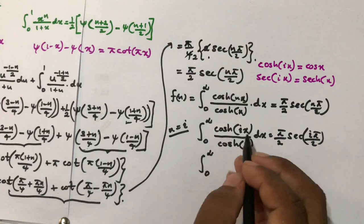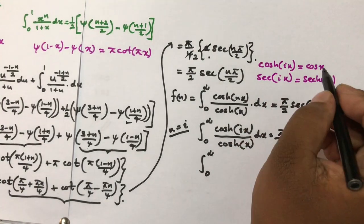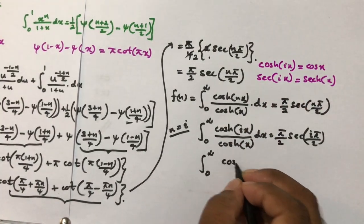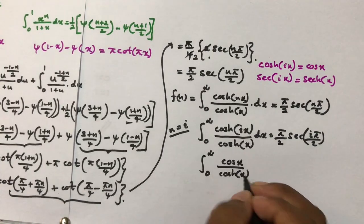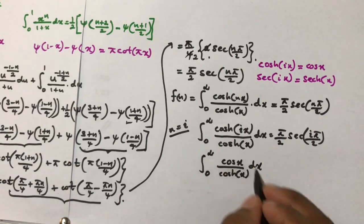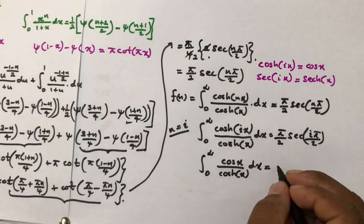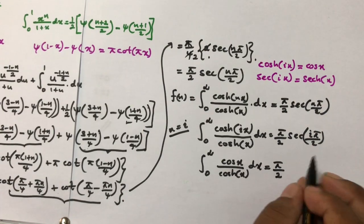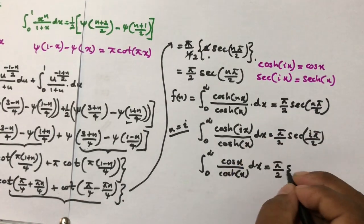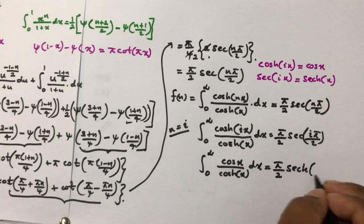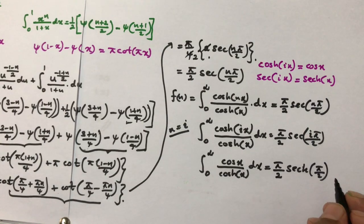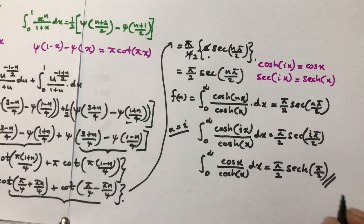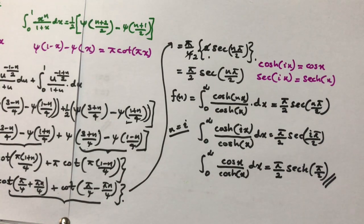Therefore, the integral from 0 to infinity of cos(x)/cosh(x) dx equals (π/2)·sech(π/2). This is the final answer for this integral. If you like this video, please subscribe to this channel. Thank you for watching.